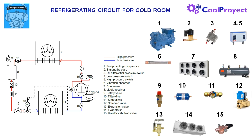For example, in number 2 we have the starting bypass, which we use normally in compressors of more than 10 horsepower. The goal is to allow the compressor to start without charge by bypassing the suction and discharge line for some seconds at the beginning. This way we get less absorbed current and we lengthen the life of the compressor.